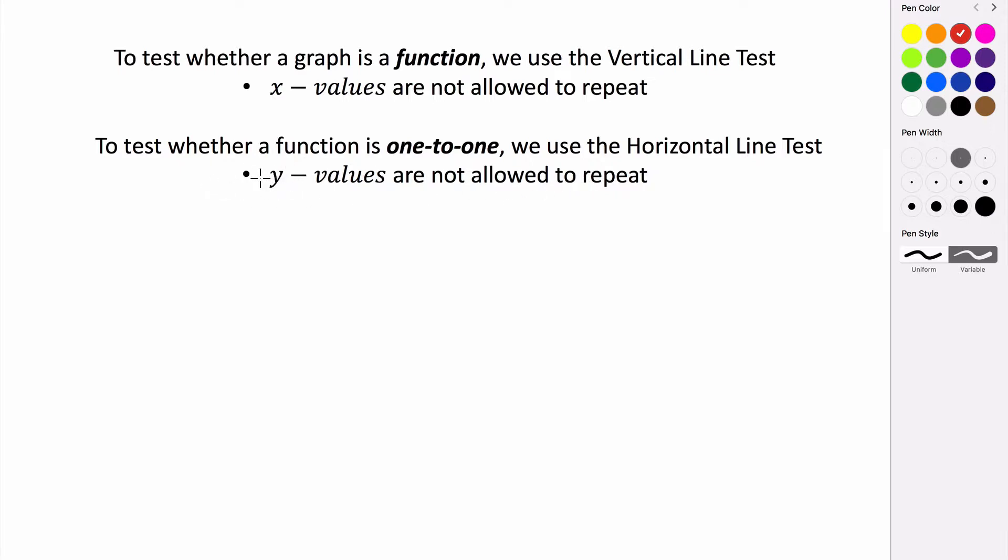And the way that we can test whether a function is one to one is we use something called the horizontal line test. So it's identical to the vertical line test, except we use a horizontal line.